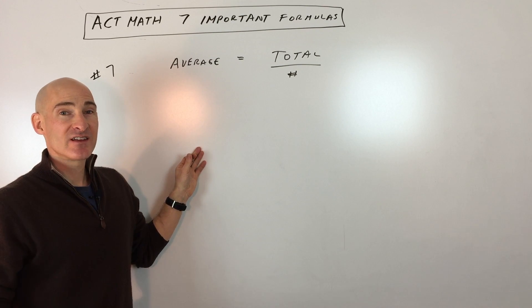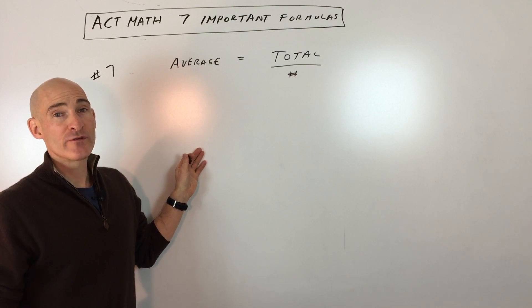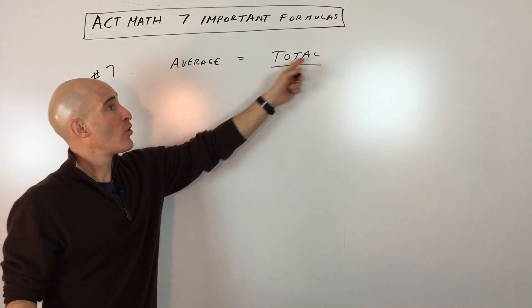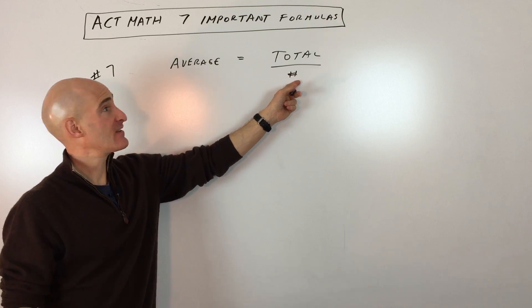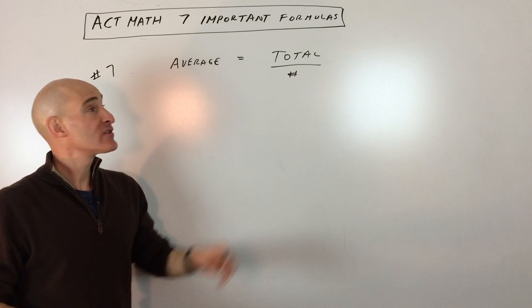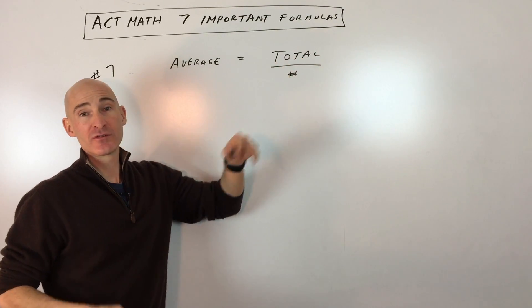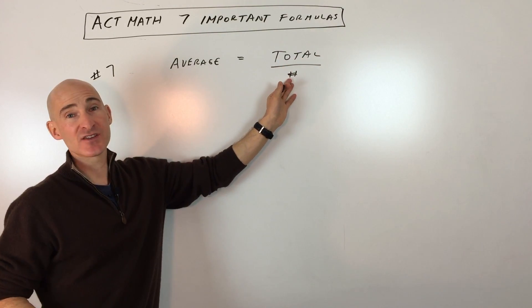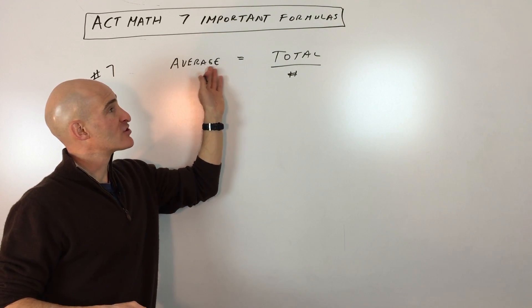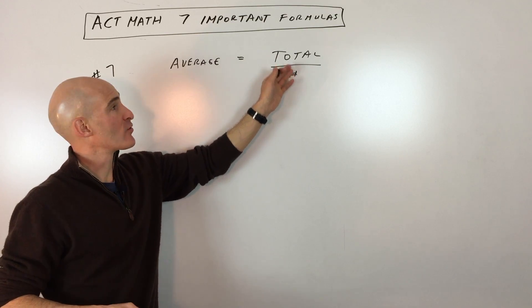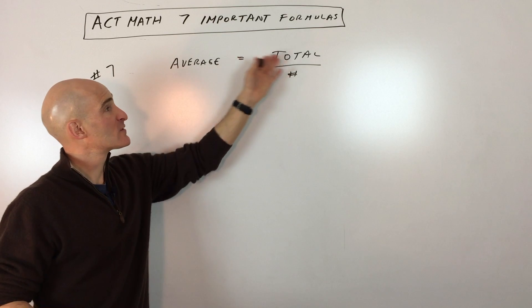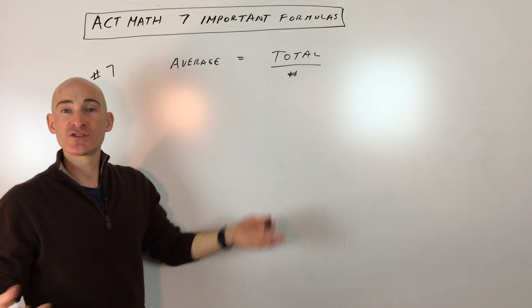Okay, last but not least, the average formula is an important one for the math section of ACT. So what an average is, is you take the total divided by how many that you're averaging, and that gives you the average. So for example, if you're trying to figure out what your average test score is, you would add up all the points from your tests, and you would divide by the number of tests that you took, and that would be your average. But on the ACT, sometimes they'll give you the average, and you might have to find out how many tests there were, or what the total is, or what one of the missing test scores are. But if you know this formula, you can substitute in what you know, solve for what you don't know.